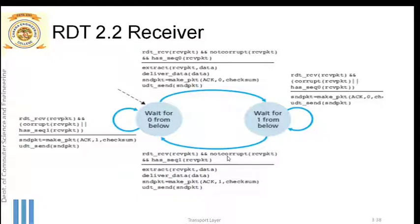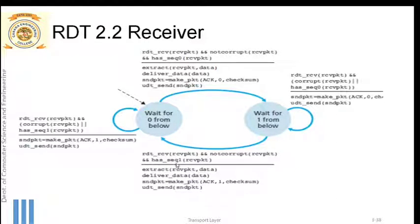The positive condition is: if the received packet is not corrupted and has the correct sequence number one, the receiver extracts the data, delivers it to the application layer, and sends ACK 1 as a positive acknowledgement for this received packet.